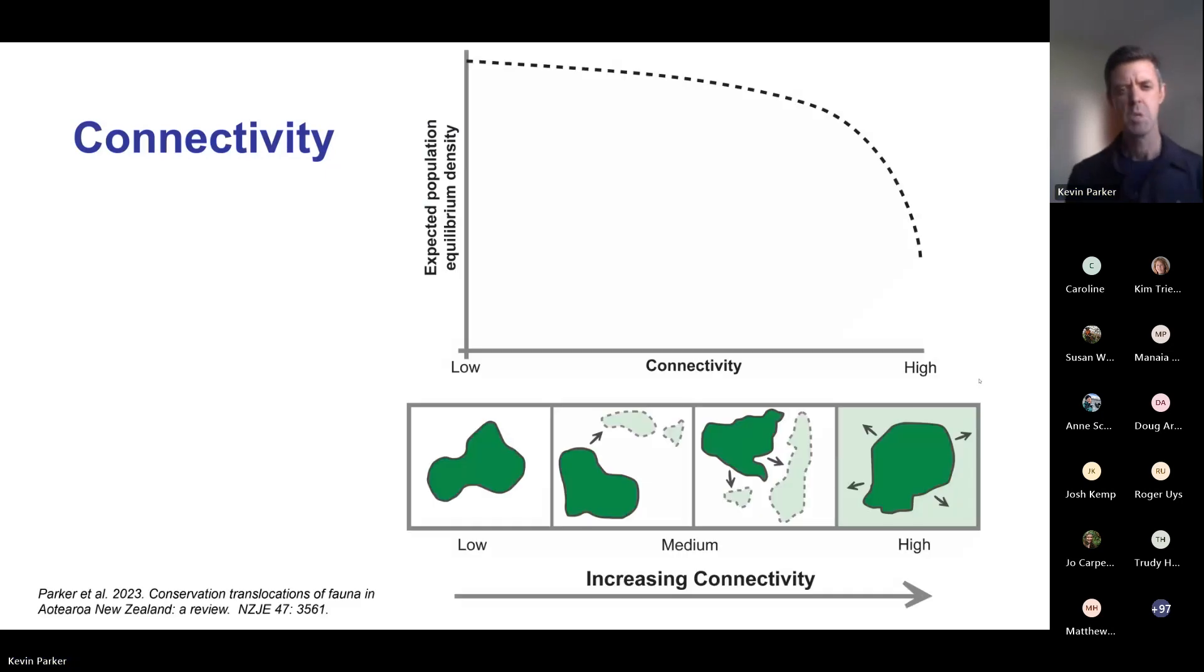However, there's another habitat variable which Manaia and Zoe have both spoken about today, which is really important in determining translocation outcomes, especially for mainland translocations where a lot of our effort is currently going. That is connectivity - the degree to which a managed habitat is connected to unmanaged habitats. In the Aotearoa context, managed pretty much always means pest control.